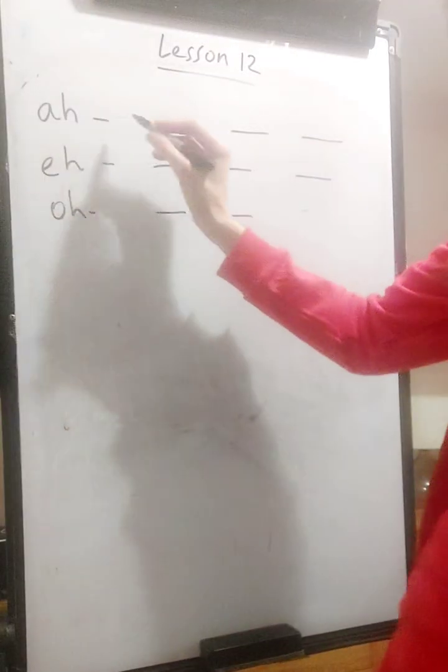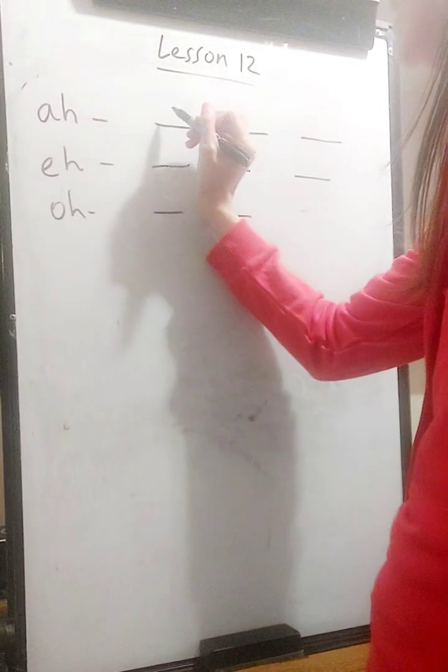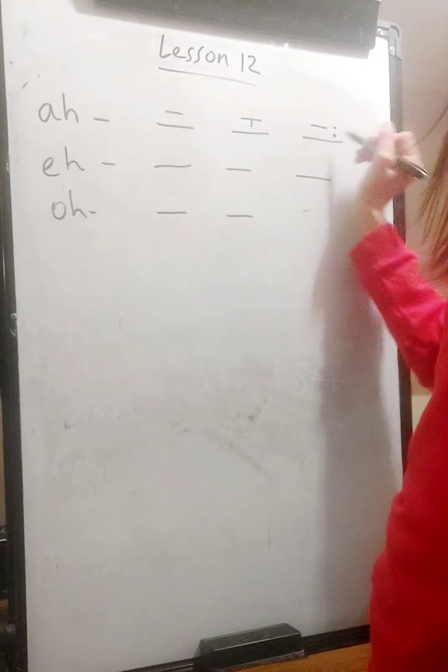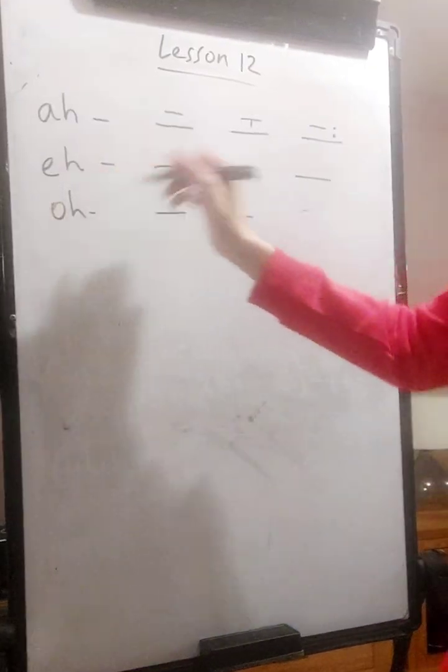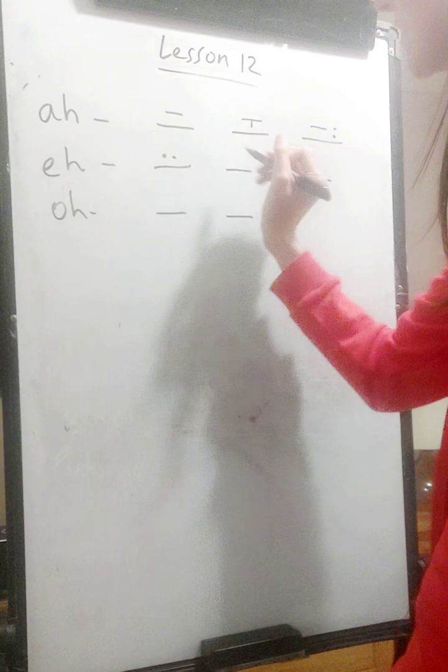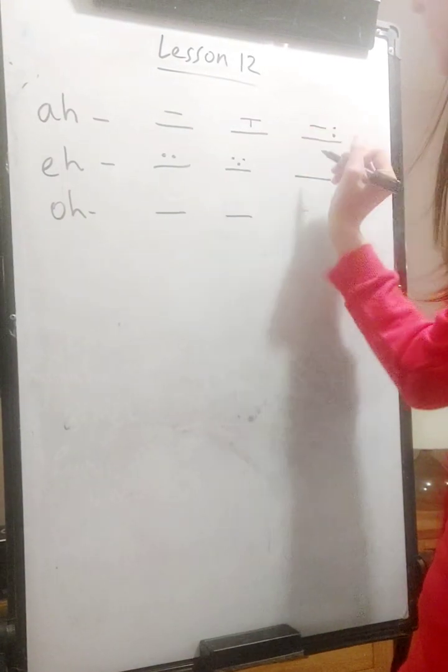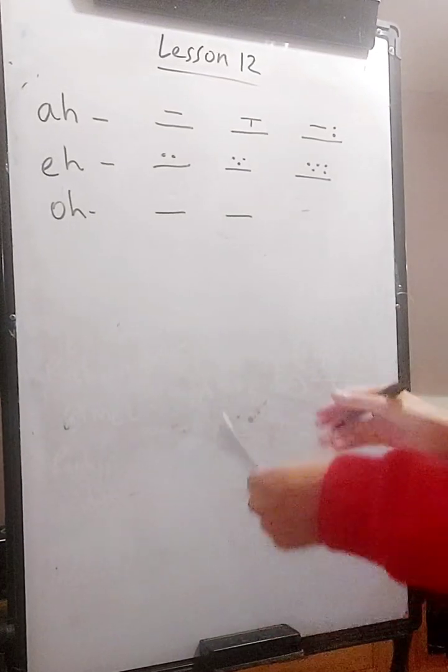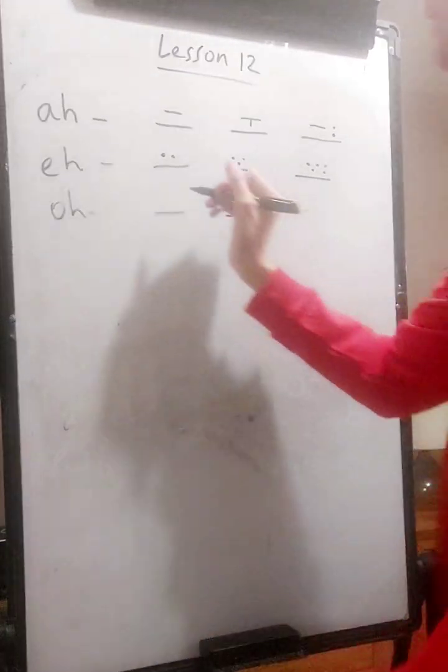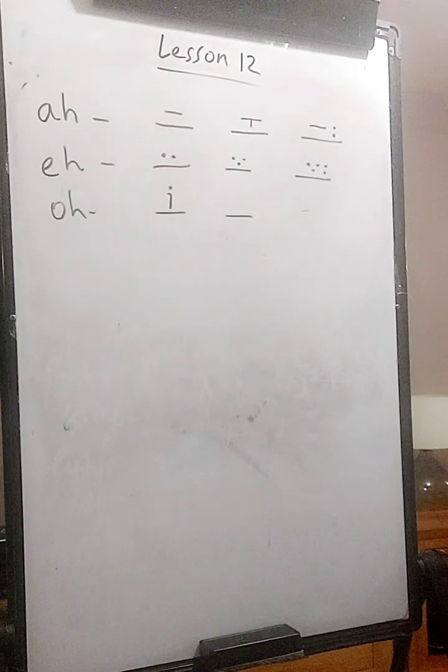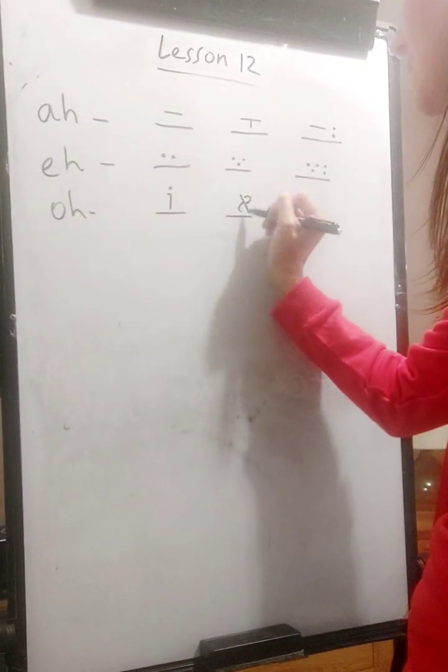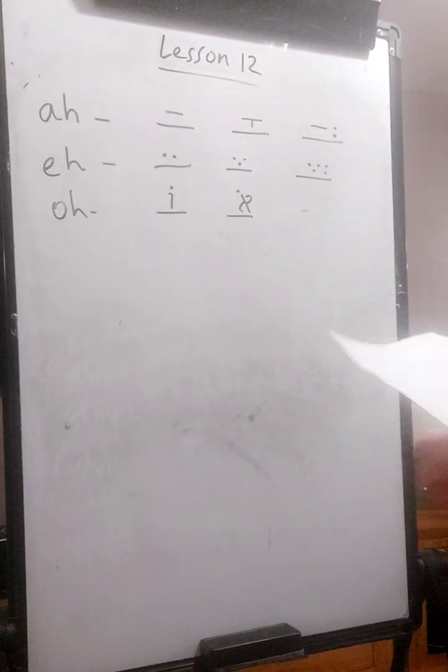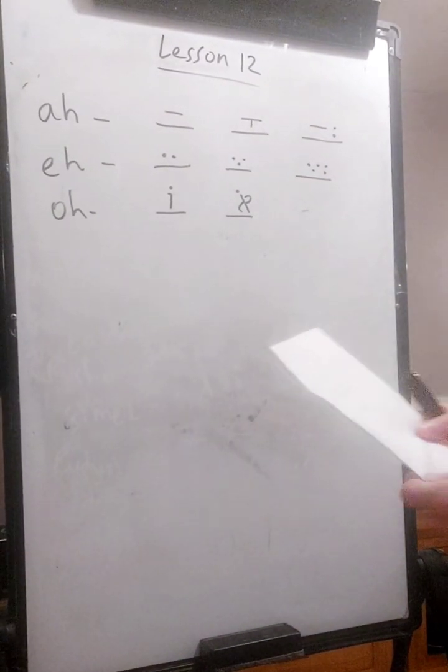So the first ones with the A vowel which sounds as A is any one of these three symbols, so well done if you've got them right. The E. Two dots, three dots, five dots. The O vowel is the vav with the dot on top, or it's a Hebrew consonant with the dot to the top left. So well done guys.